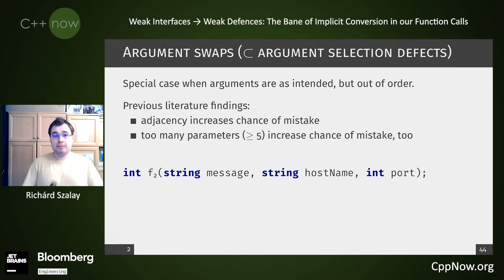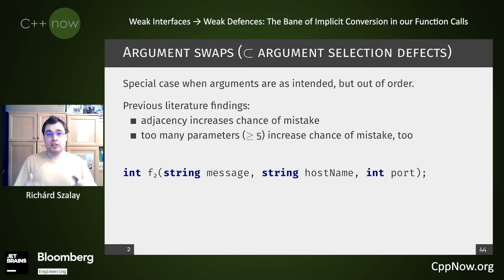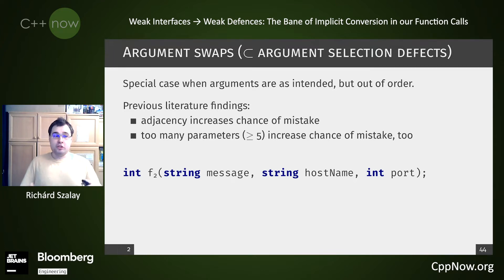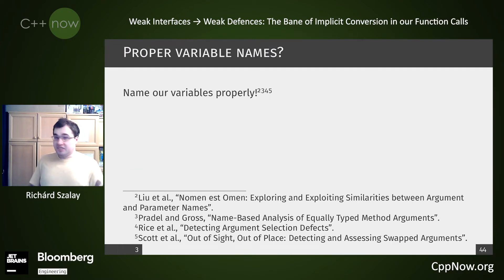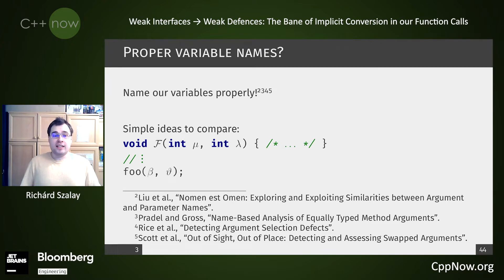Argument swaps are a special case of argument selection defects when we have all the variables or expressions we want to pass in the function call, but we just swap them between the individual parameters. For example, if I put two strings next to one another, I will invite my users to accidentally put the hostname first if they don't look at what the IDE says about the parameters. There are plenty of existing methods to find this issue — I have several good papers linked in the footnotes. All of them generally rely on naming things properly. The compiler doesn't care about names, but we humans do, and we can make tools that do.